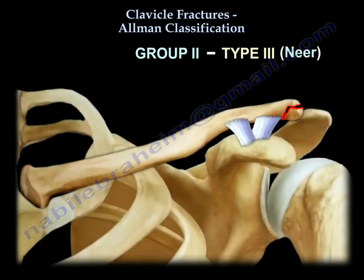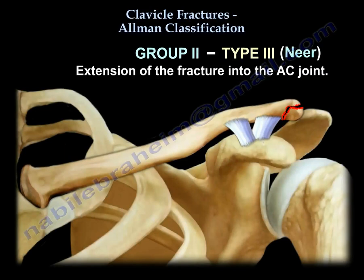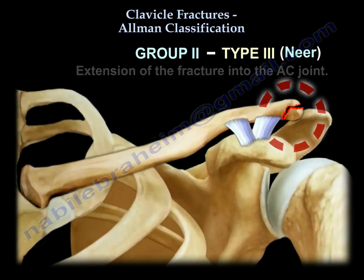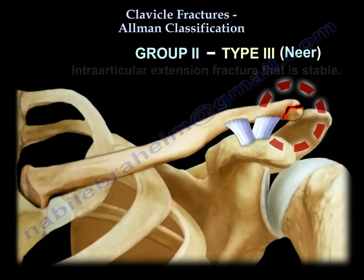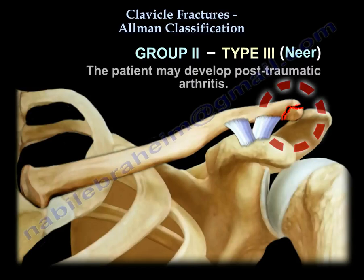Type 3 in Group 2 means extension of the fracture into the AC joint — it is an intra-articular fracture. It is a stable injury because the fracture occurs lateral to the ligament. However, the patient may develop post-traumatic arthritis.